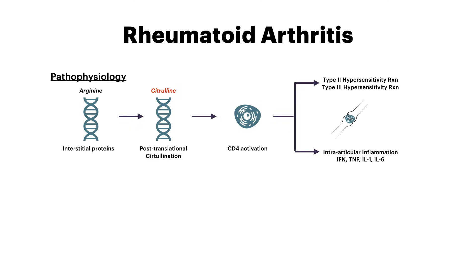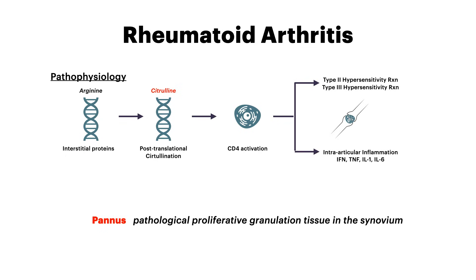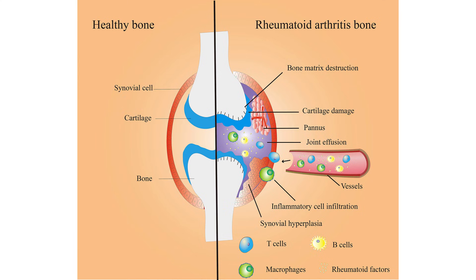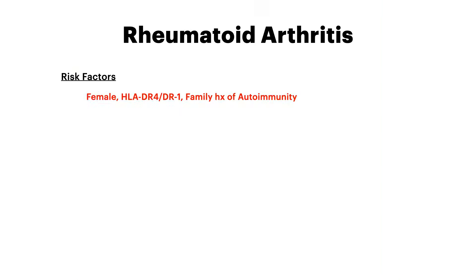The net response of the body is to form a pannus — proliferative granulation tissue inside the joint. Just like in osteoarthritis, having a foreign form of inflammation now inside the joint means the joint is expanding, inflammatory, and painful. Risk factors for rheumatoid arthritis: female, just like OA. HLA-DR4 and HLA-DR1 are associated with rheumatoid, as is a family history of autoimmune conditions — reflecting its genetic and autoimmune basis.